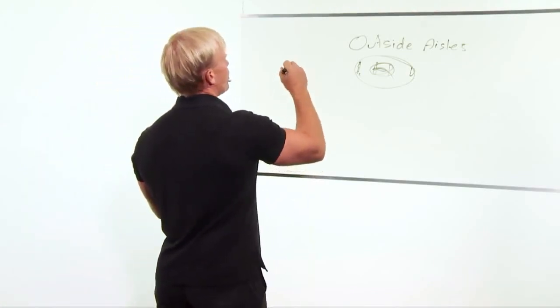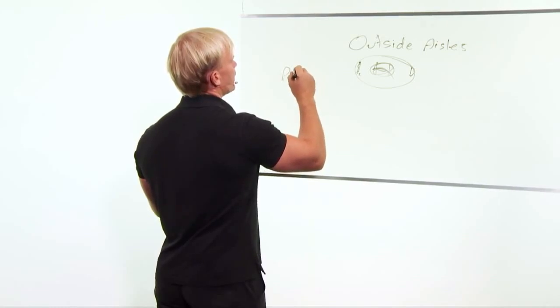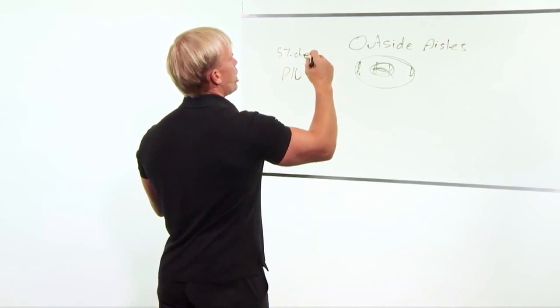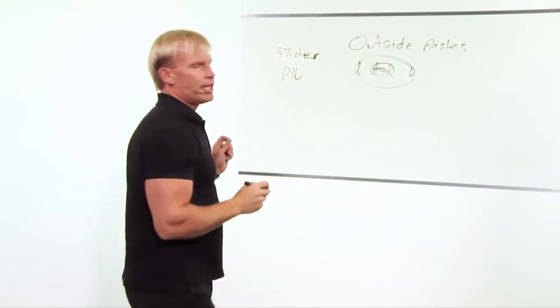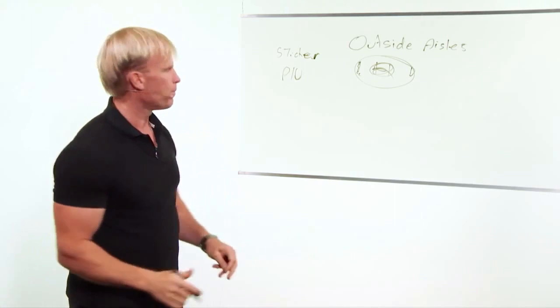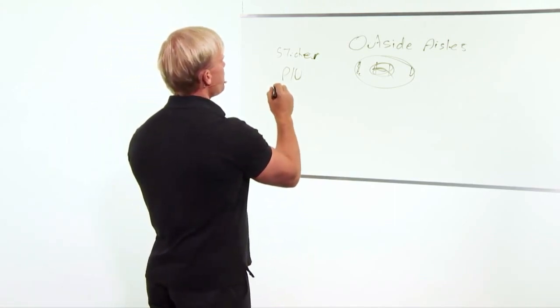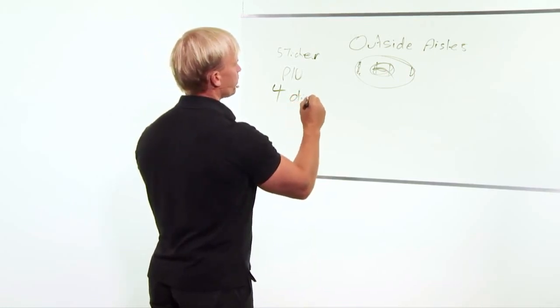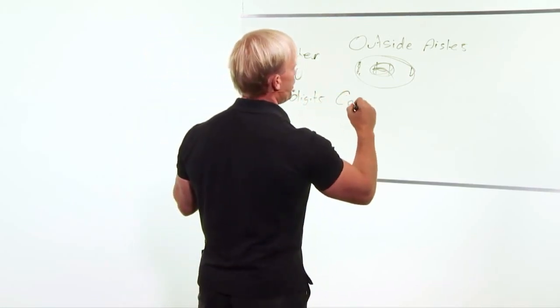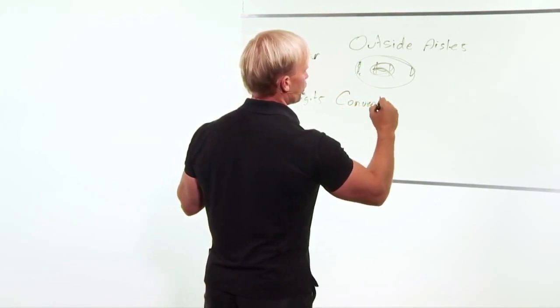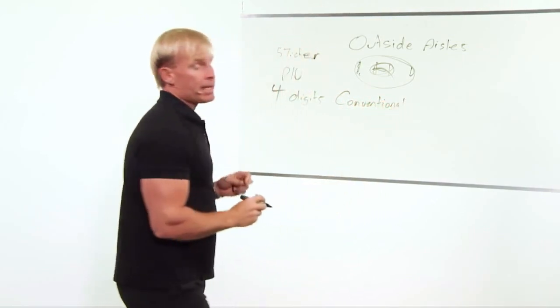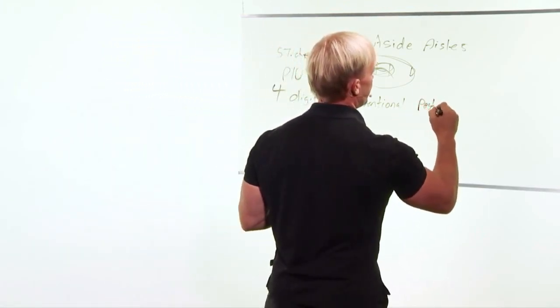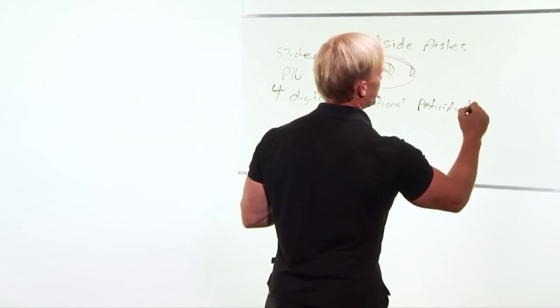The three things - there's a little sticker you see on your apples and oranges and all those things that you'll see out there. If the number starts with a four and it's usually four digits, that means it's conventionally grown. What does that mean? Well, conventional is kind of a weird name. This means they use pesticides, herbicides...